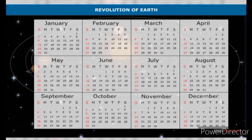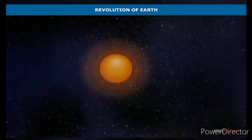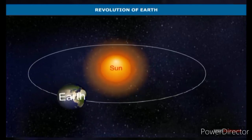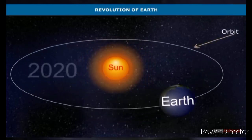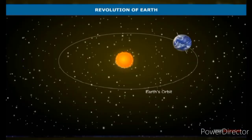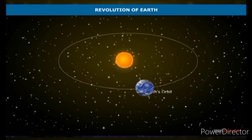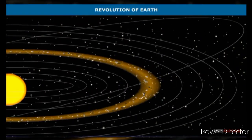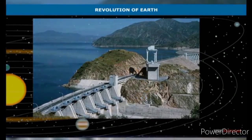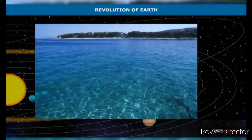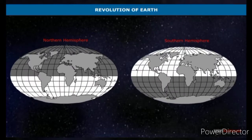This extra day is added to the month of February, giving it 29 days instead of the usual 28 days. Hence, every four years the month of February has 29 days — this year is known as the leap year. While moving around the sun, the earth follows a fixed path known as the orbit. The earth's orbit is elliptical in shape. The two hemispheres — the northern hemisphere and the southern hemisphere — remain inclined towards the sun during one half of the year.